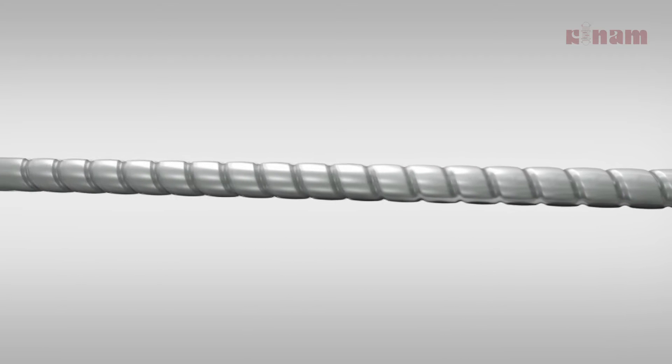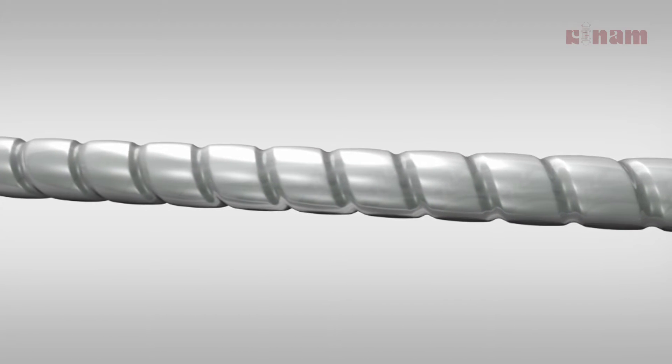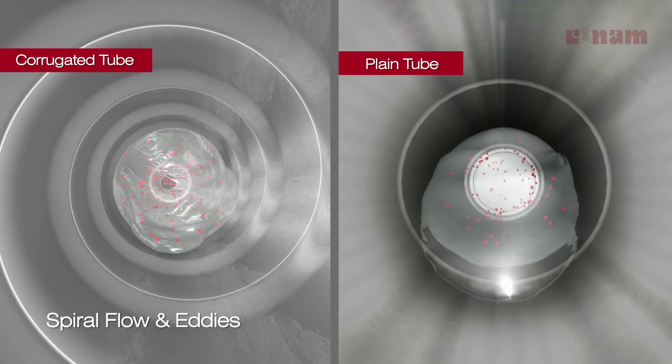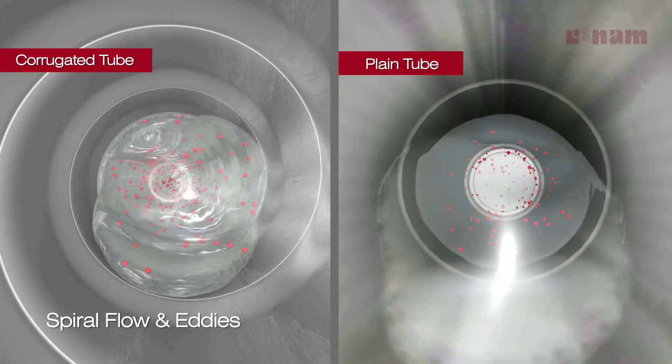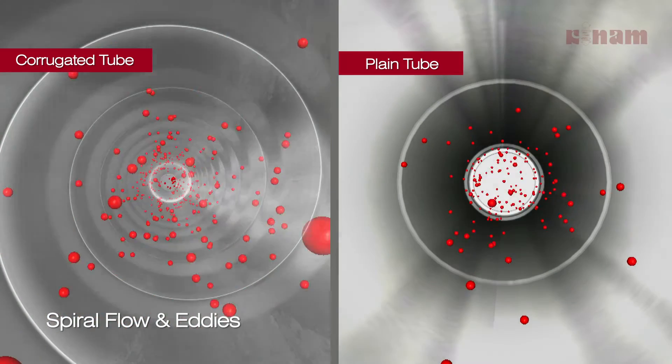The helical indentation imparts two flow regimes to the fluid in the corrugated tube: spiral at the core and eddies at the periphery.